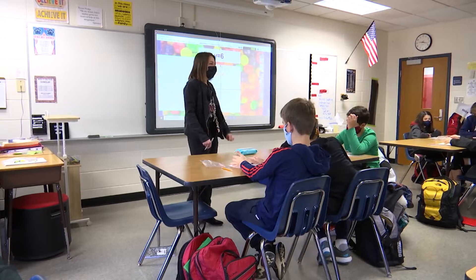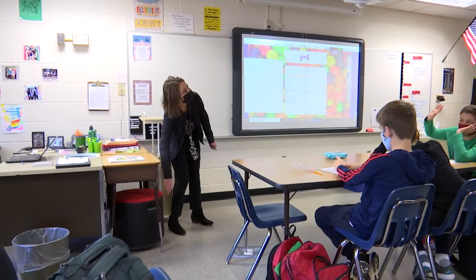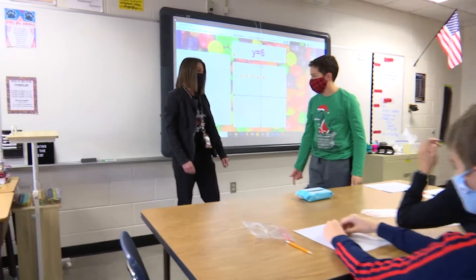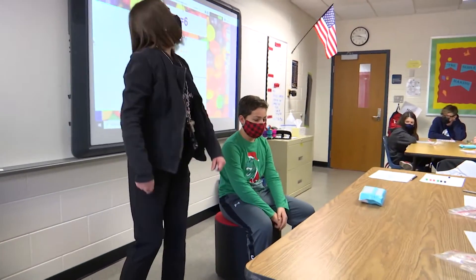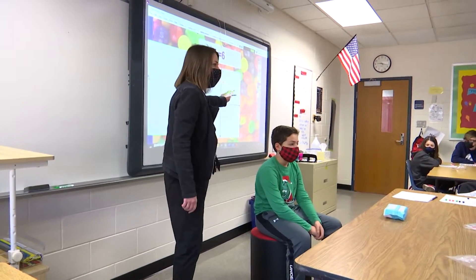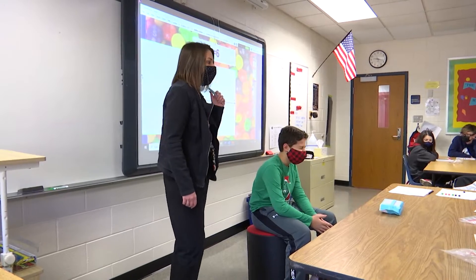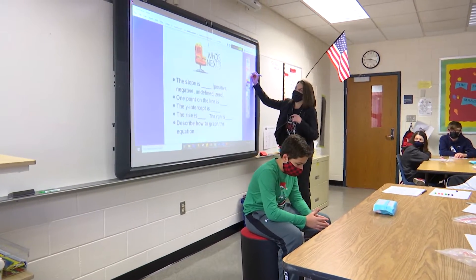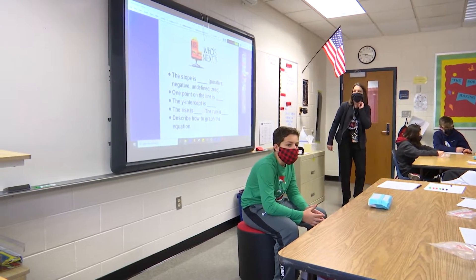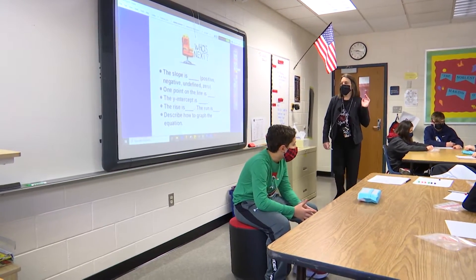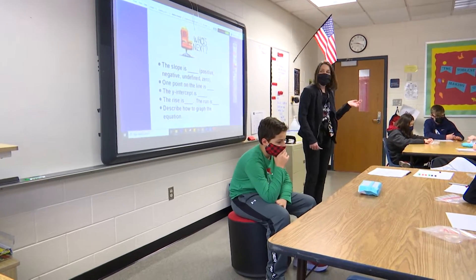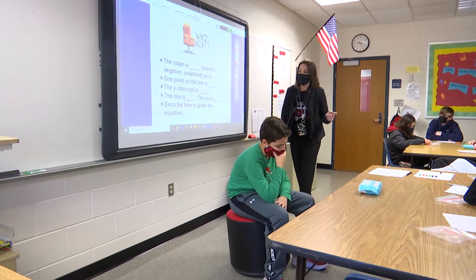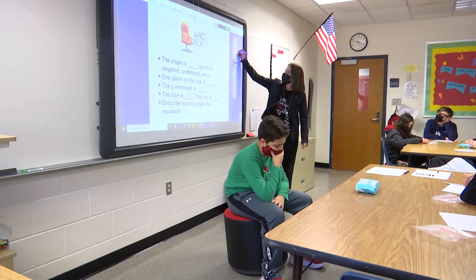For this next one, I want to play a little game. Do I have a volunteer to come up and be in the hot seat? You're very brave. I like your shirt. So you're not facing the board, don't turn your head. We are going to give him clues to the next equation. So I want you guys to raise your hand. Here are some examples of clues that we might give: we might say the slope is positive, we might say one point on the line is zero seven, we might say the y-intercept is blank, or we might tell them the rise and the run. So we're going to go ahead and give some clues and see if he can guess the equation.